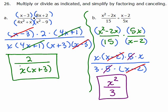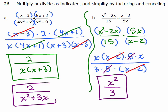By the way, for part a if you want you could multiply the denominator out and leave it as x squared plus 3x. That's also fine. Either way, it's correct.